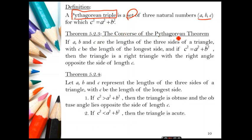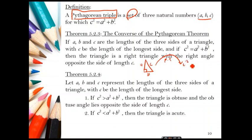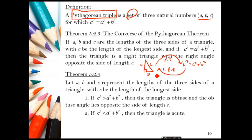Theorem 5.2.3 is the converse of the Pythagorean theorem. If we know a triangle is a right triangle with longest side C and other sides A and B, then C squared equals A squared plus B squared. Conversely, if we only know that C squared equals A squared plus B squared where C is the longest side, we can conclude the triangle is a right triangle.